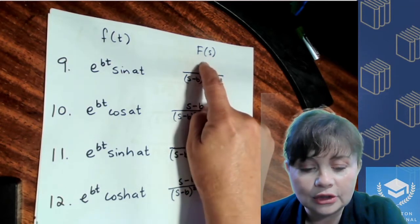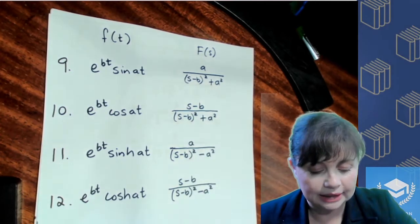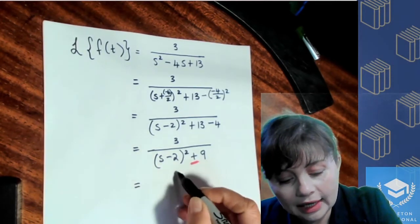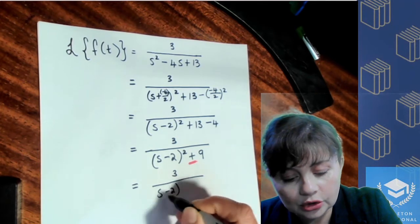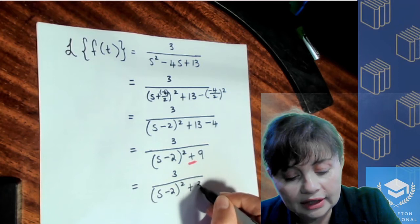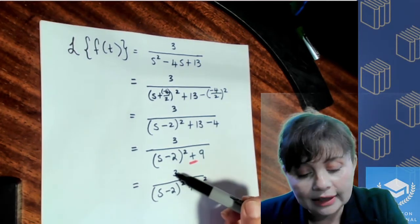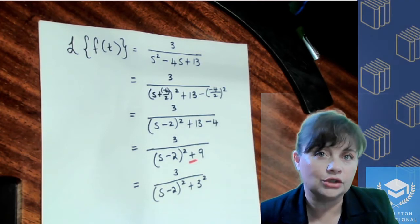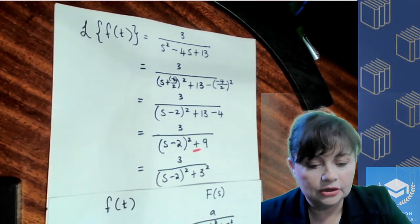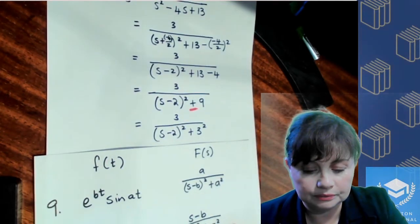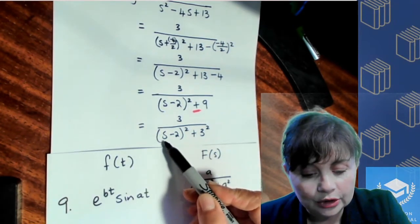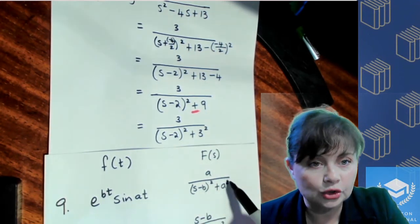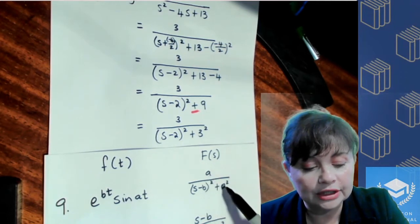The next important thing is that the numerator has to match with the second term in your denominator. In our denominator we have (s minus 2) squared — this term has to be a square — and that is the same as 3 squared. So the numerator has to match with this term, and it does, which means we have our function in the form exactly as on the table.